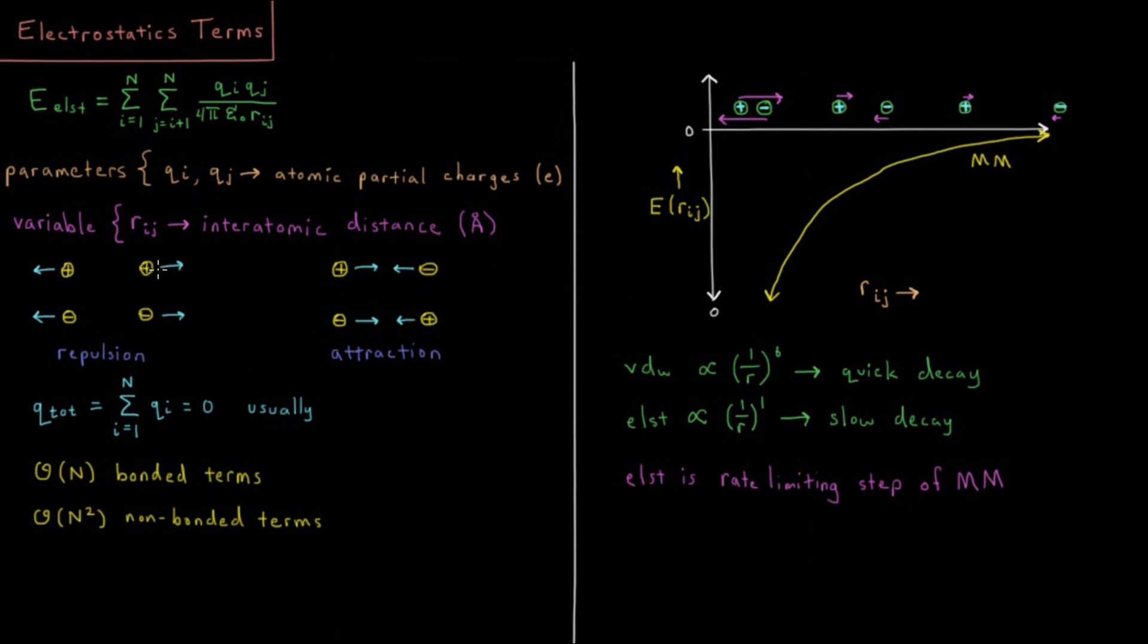Every pair of atoms is a certain distance apart, and each of them has assigned to them a parameter for their atomic partial charge, usually in units of charge of the electron. The charge of the electron is something like 1.6 times 10 to the minus 19 coulombs in SI units.